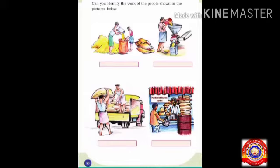Now I am going to give you an activity. It is given in your textbook on page number 80. Here we can see some pictures. First, you have to identify the work of the people shown in the picture. Write with your pencil in your textbook.